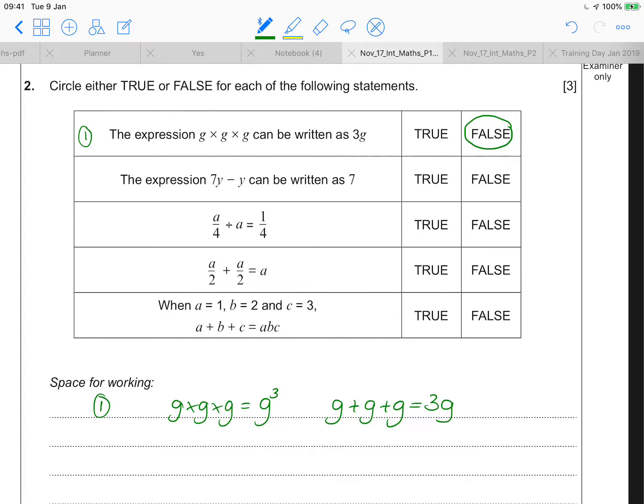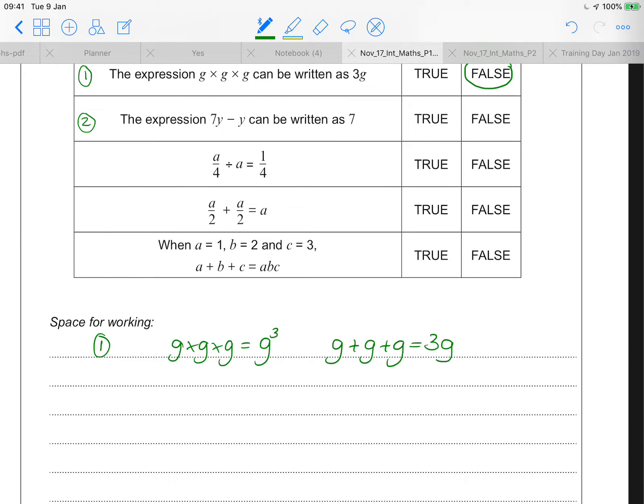Then in question 2, the expression 7y take away y can be written as 7. Well that's actually, if you think about it, 7 y's take away 1 y. 7 y's take away 1 y would have to give you 6y. So that's also false because that's not going to leave you with 7.